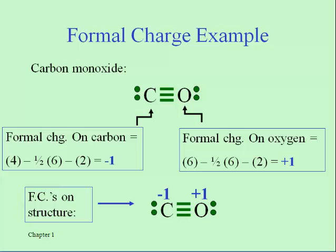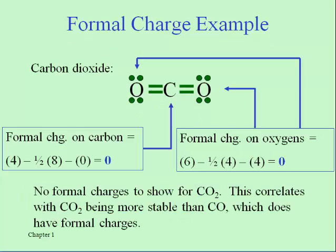Carbon monoxide is a highly reactive molecule and the formal charges suggest that should be true — both atoms have the octet rule satisfied, but there is a negative formal charge on carbon and a positive formal charge on oxygen. Carbon dioxide by contrast is much more stable, and if you do those calculations on these atoms you get zero across the board. So you want to get used to calculating formal charges for every atom in any structure so that we know which atoms have minimum formal charges.